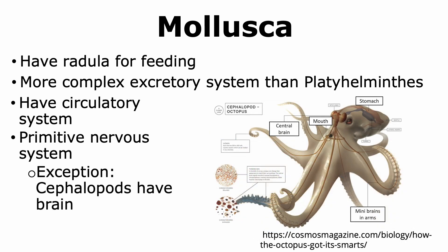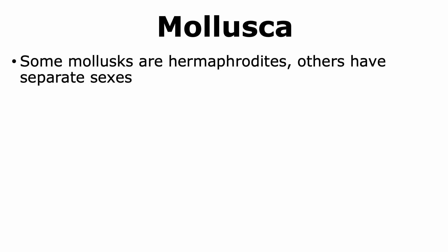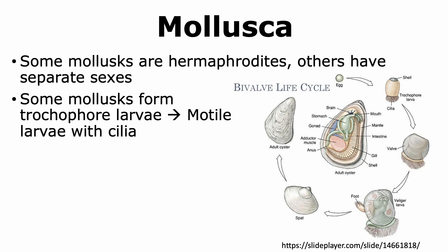Cephalopods, belonging to the class Cephalopoda under phylum Mollusca, have a well-developed nervous system and a brain. Octopus have a central brain, and each of their eight arms has its own mini-brain. Squids are also known to have well-developed brains, sometimes more than one. Some mollusks are hermaphrodites while others have separate sexes. Some mollusks form a distinct larval structure called a trochophore larva, which is motile because it has a tuft of cilia — placing them in the clade Lophotrochozoa.